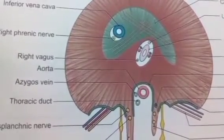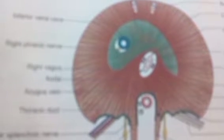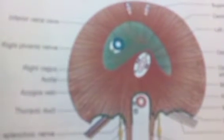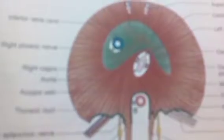Apart from this, the intercostal nerves and vessels as well as the left phrenic nerve also pass through the diaphragm.